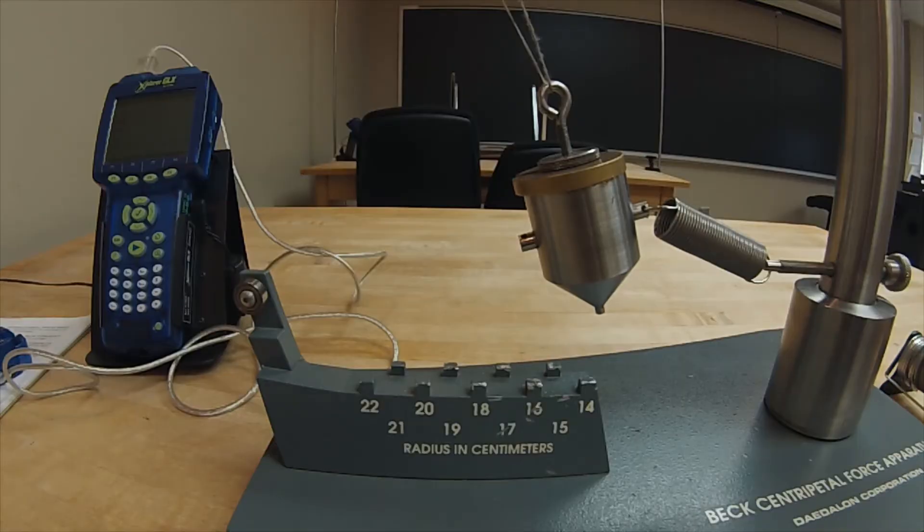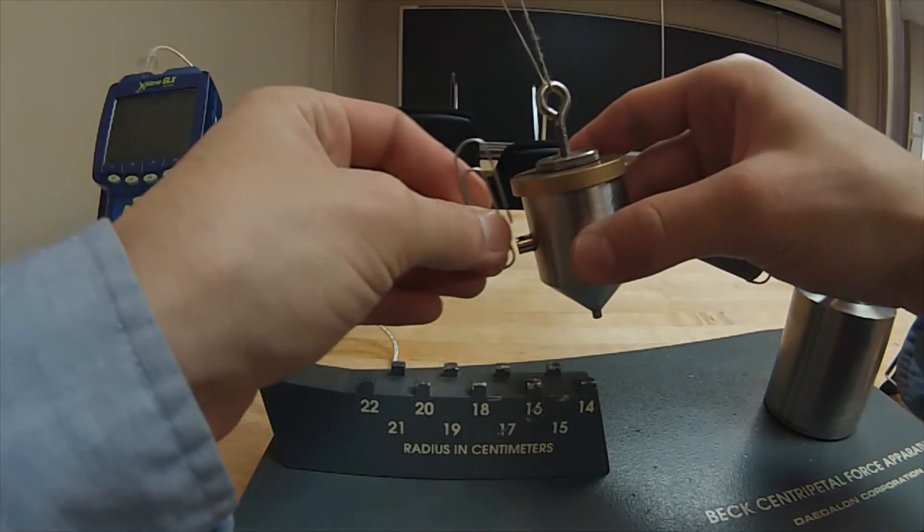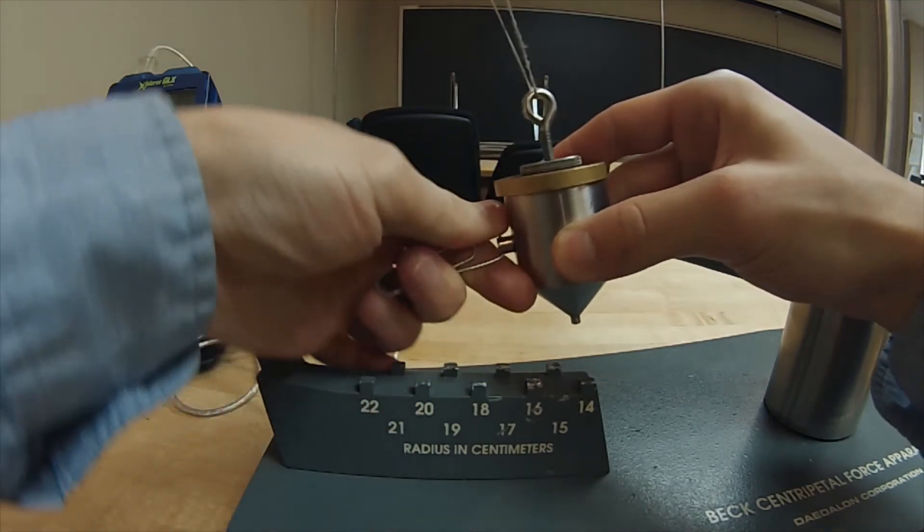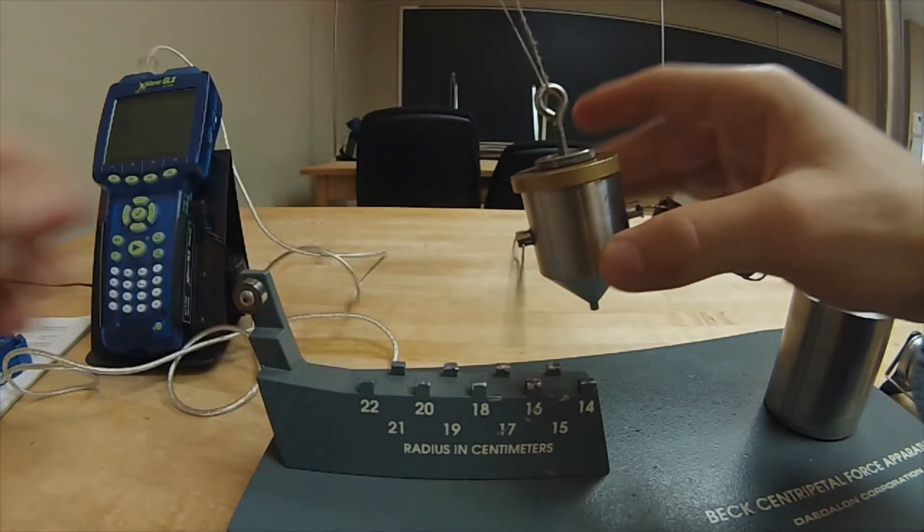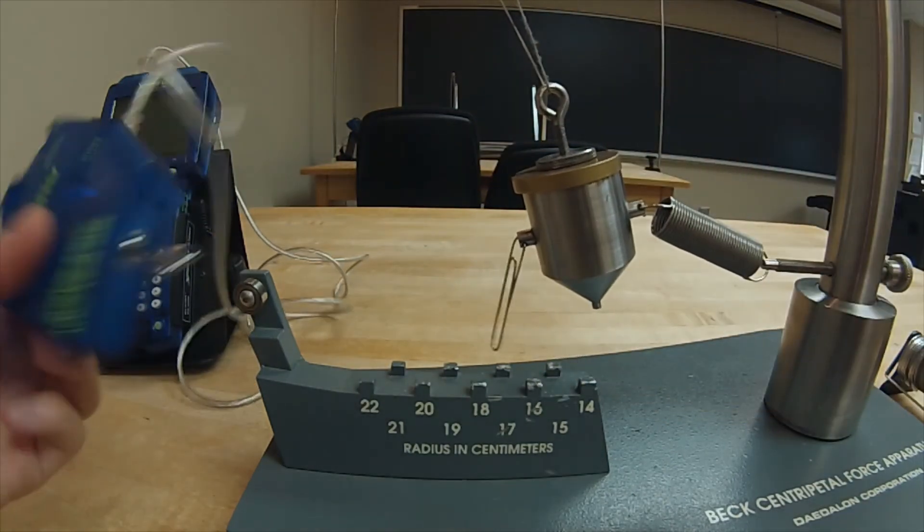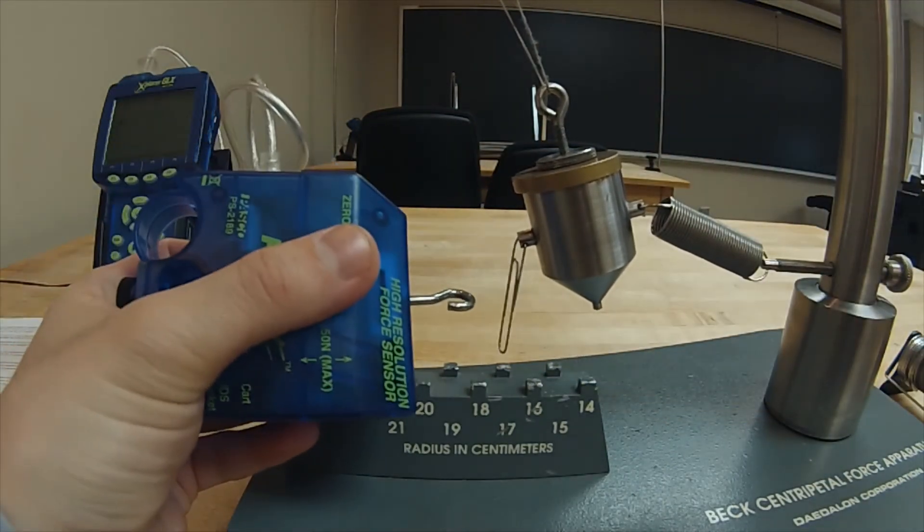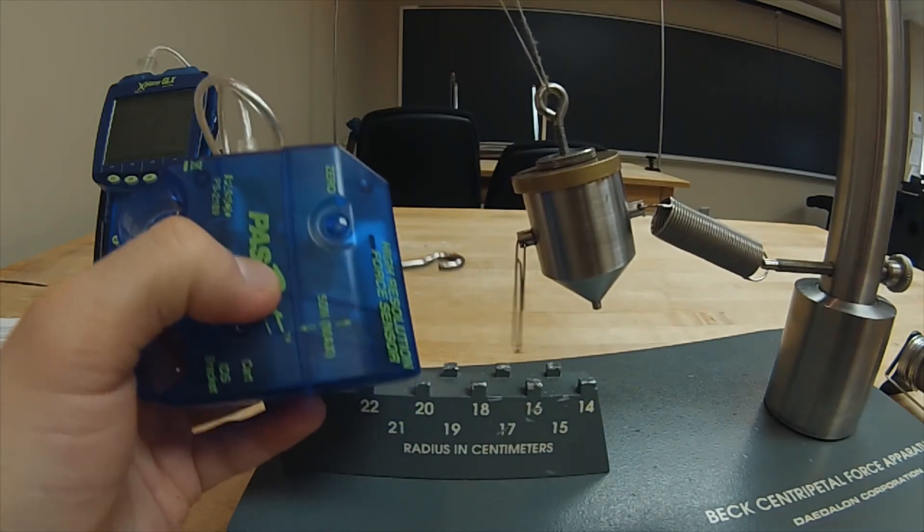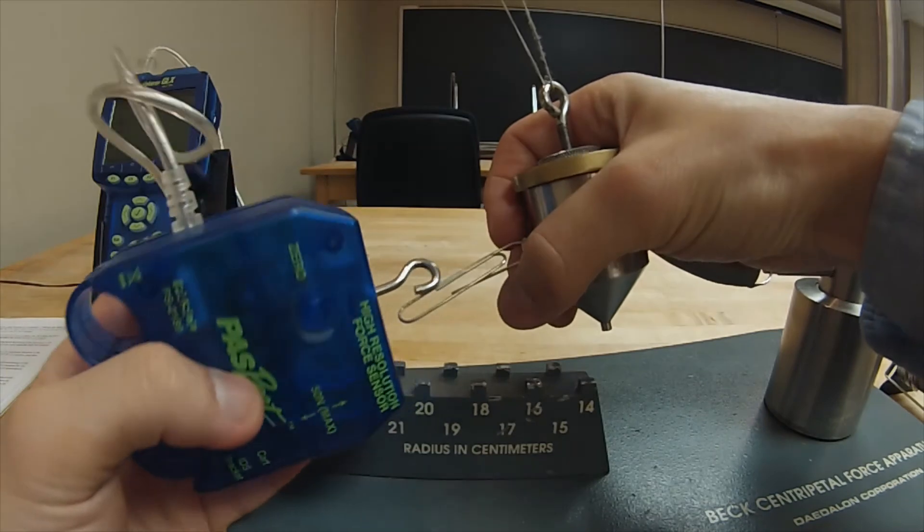Before reconfiguring the apparatus for a different radial position, you will need to use the GLX force sensor to experimentally determine the force required to pull the bob back to the vertical position over the correct radial marker. As usual, make sure to zero the force sensor, and either the graph or digit option may be selected on the GLX.